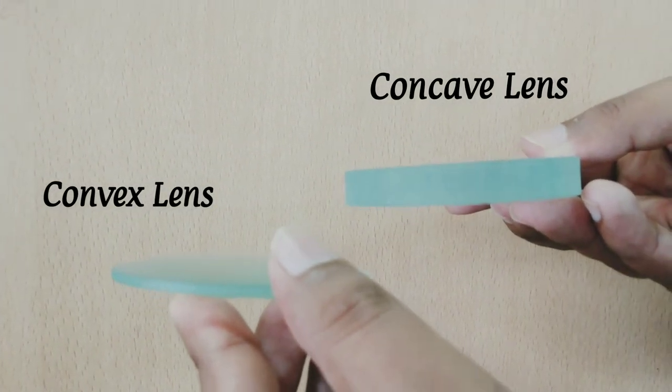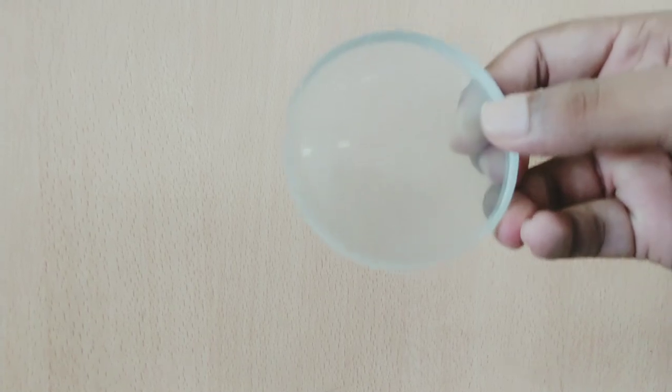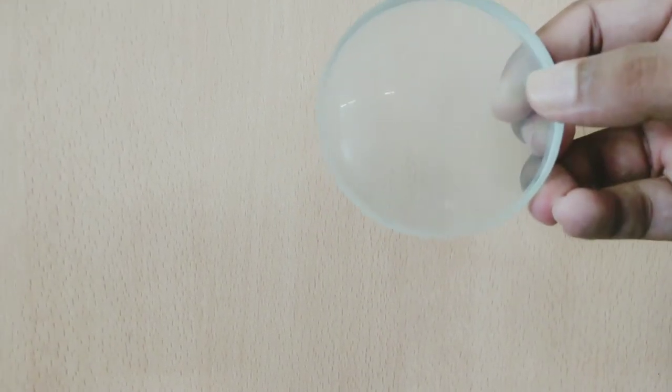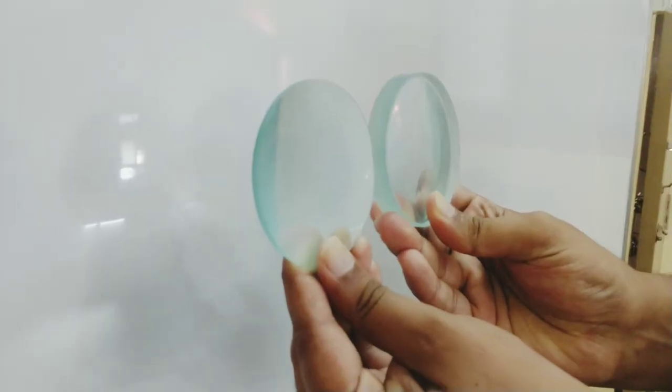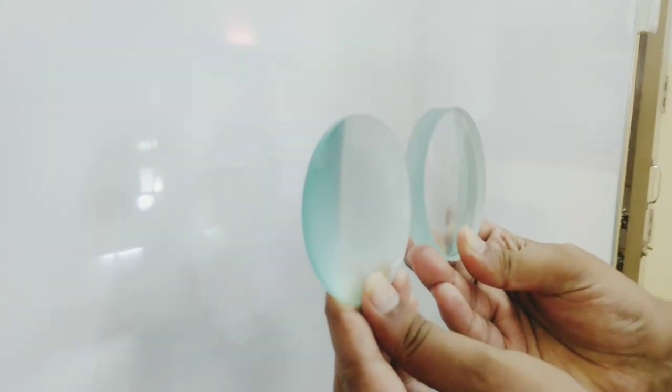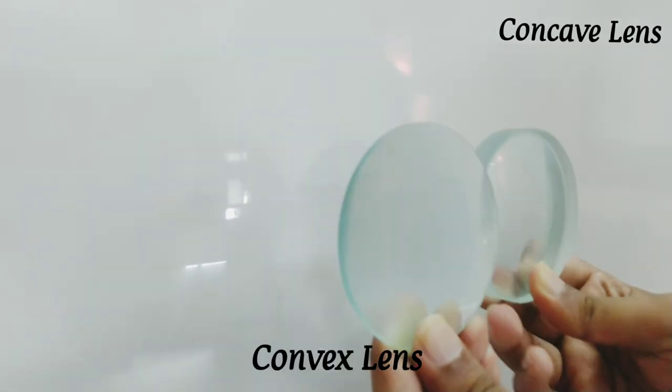A convex lens can produce a real image, whereas a concave lens will never produce a real image. So that is also one way of identifying it. So here I have placed convex lens and a concave lens, and you can see that there is a clear image formed due to convex lens and not due to a concave lens.